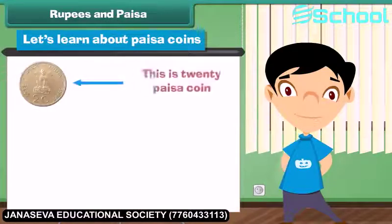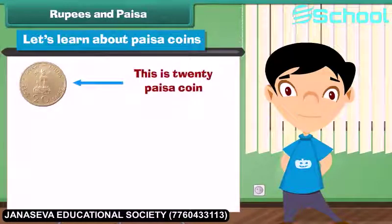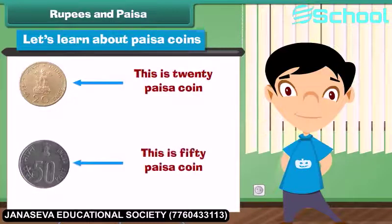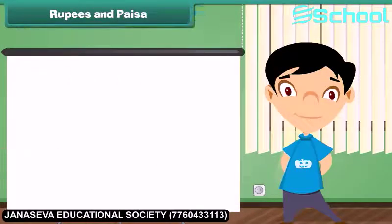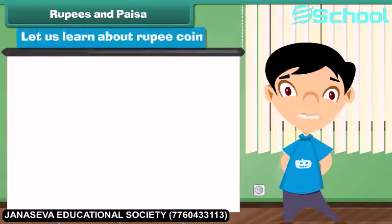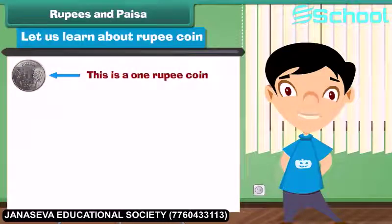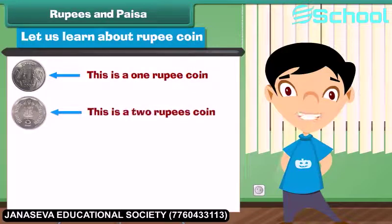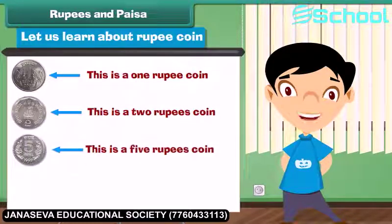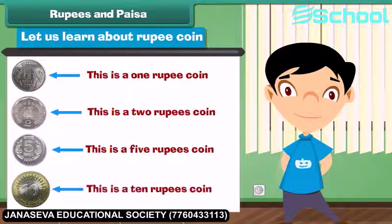Let's learn about paise coins. This is a 20 paise coin. This is a 50 paise coin. Now let us learn about rupee coins. This is a 1 rupee coin. This is a 2 rupees coin. This is a 5 rupees coin. This is a 10 rupees coin.